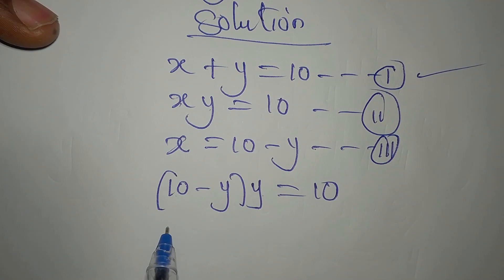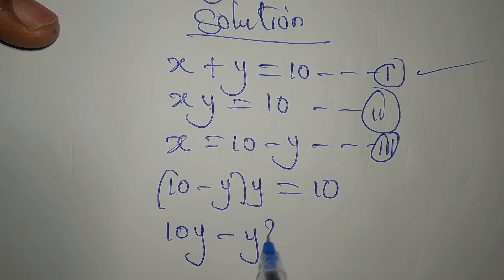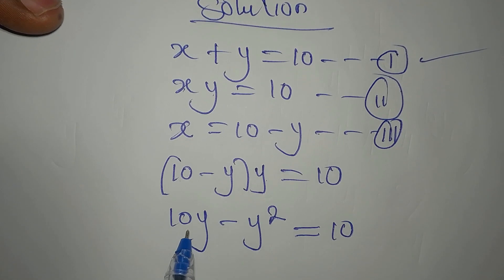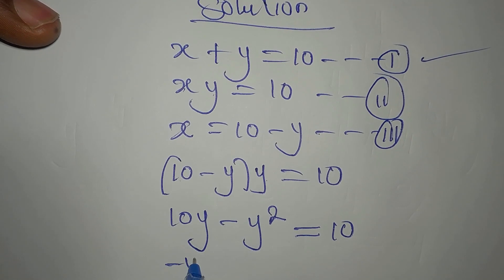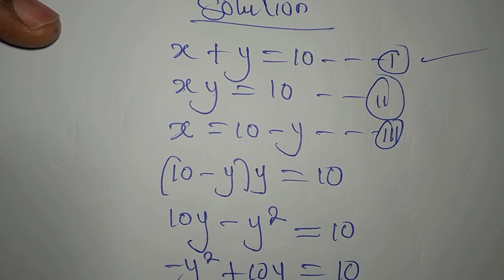Now, 10 times Y is 10Y. Y squared is going to be here. This is equal to 10. But 10Y minus Y squared is the same thing as minus Y squared plus 10Y. This is equal to 10.